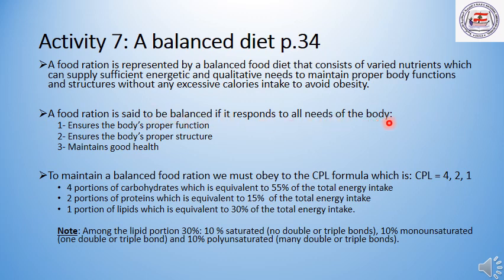A food ration is said to be balanced if it responds to all the needs of the body. First, it is supposed to ensure the body's proper function; it is also supposed to ensure the body's proper structure; and it has to maintain good health. To maintain a balanced food ration, one must follow the CPL formula: C stands for carbohydrates, P stands for proteins, and L stands for lipids.